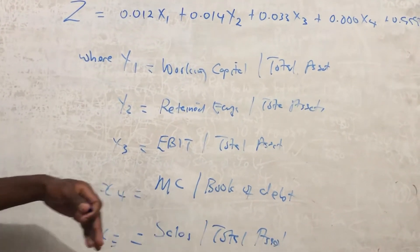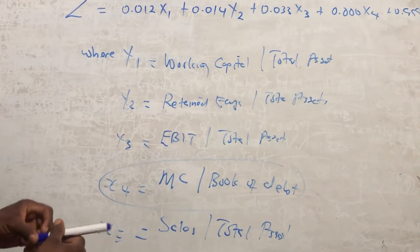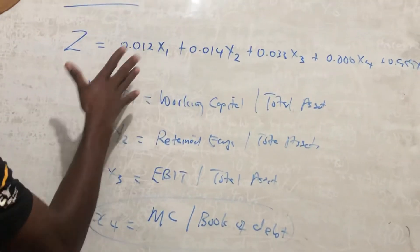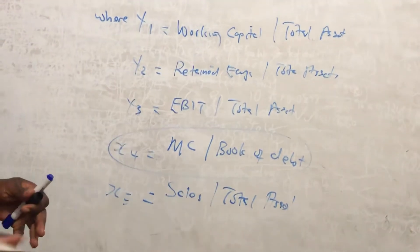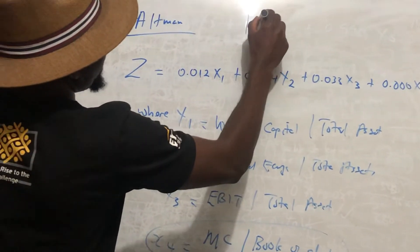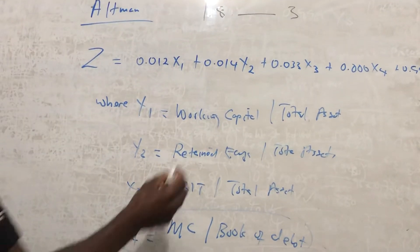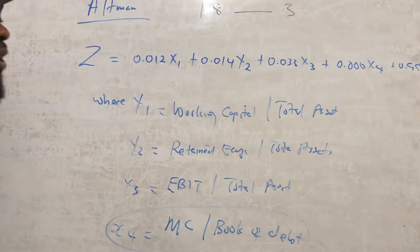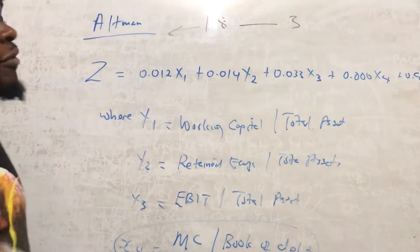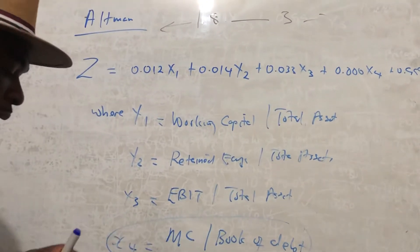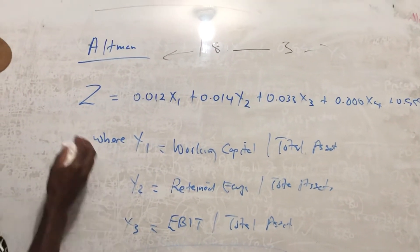After calculating and inputting the values into your formula, you interpret your results using the following regions: if your score is between 1.8 and 3, the company is in a gray area. If it is less than 1.8, the company is likely to fail. If it is more than 3, the company is in a good position. That is the Altman Z-score.